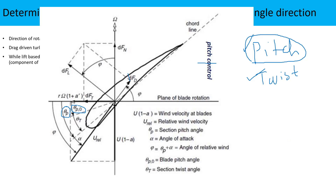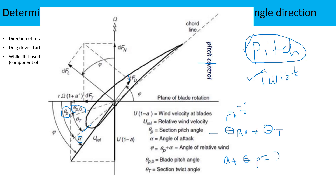The blade section pitch angle theta_P equals theta_P0 — which in our configuration H is 3 degrees — plus the twist angle, which is different for each section. For optimum lift production, some angle of attack must also be given. This angle of attack alpha is added to the section pitch angle theta_P.